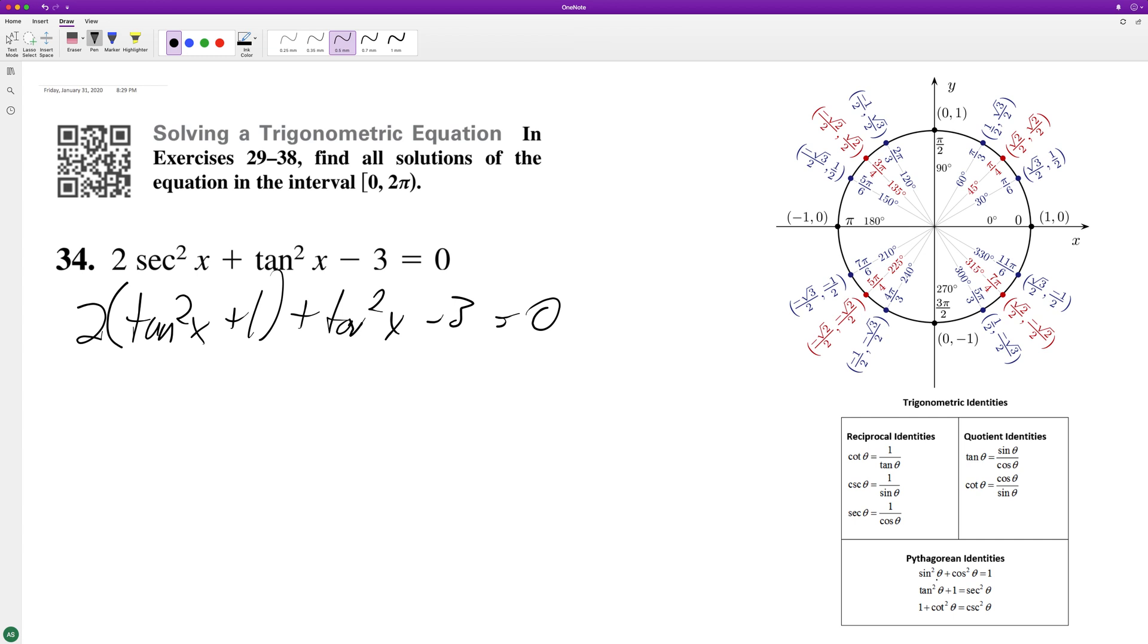All right, so we combine this, we distribute this two, so this will become three because we're adding the tangent outside there, tangent squared x, and then plus two minus three equals zero.